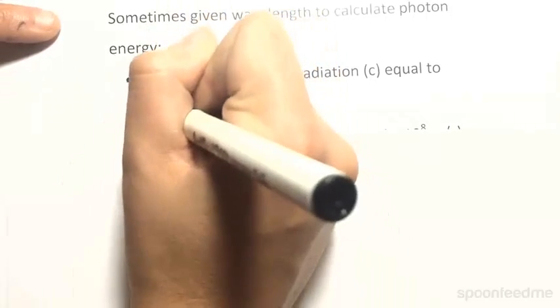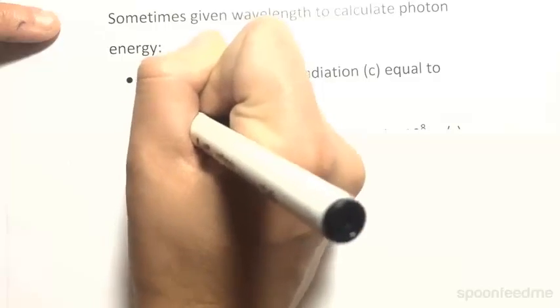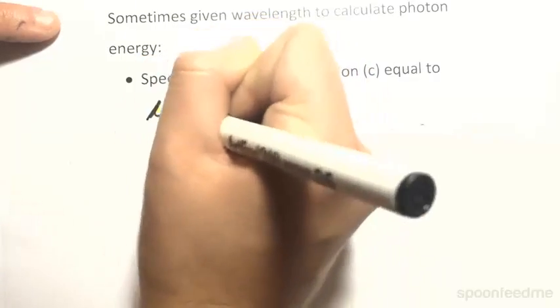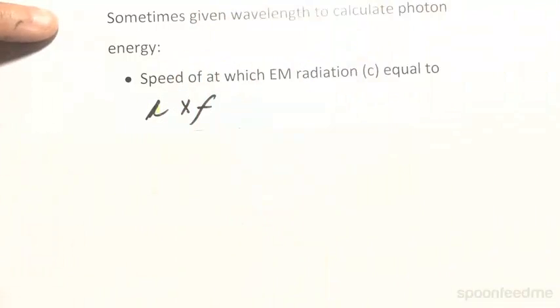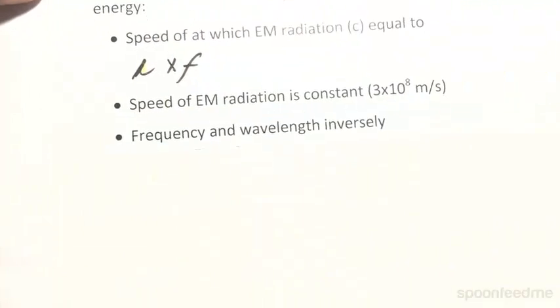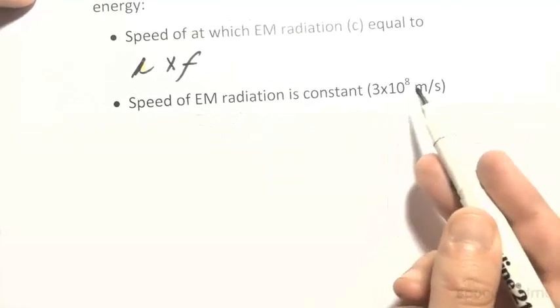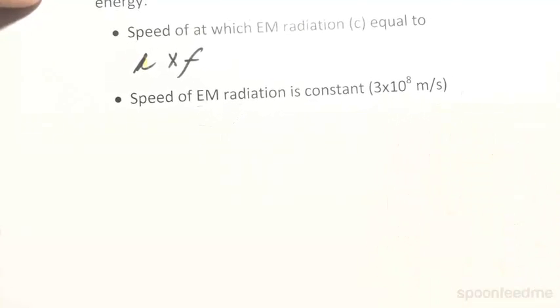The speed of light is actually a constant value, and it's equal to the wavelength lambda multiplied by the frequency. Because the speed of light is constant at a value of 3 times 10 to the power of 8 metres per second, the frequency and the wavelength are actually inversely proportional.